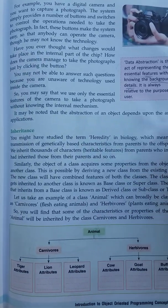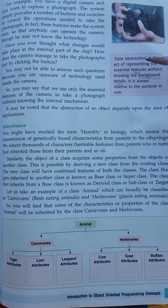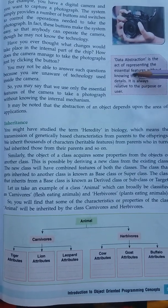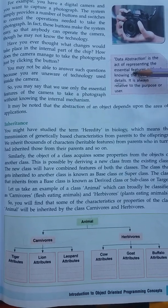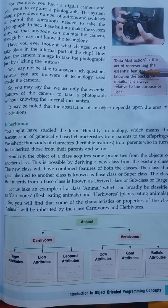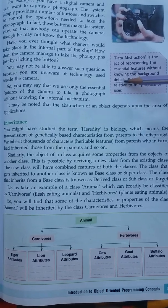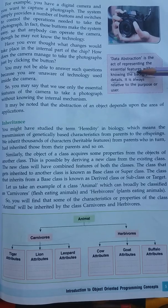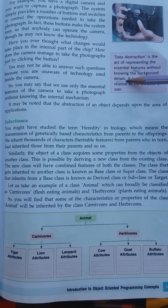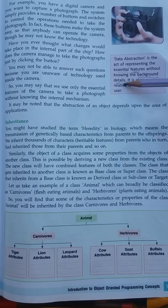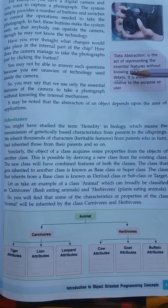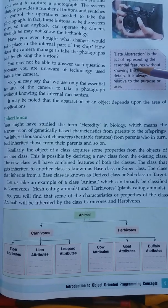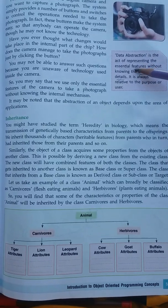Data abstraction is the act of representing essential features without knowing background details. For example, if I'm talking about a mobile, we are interested in features, not background details. Similarly, in any other device we are interested in features, not in background details. If somebody is interested in background details, it means that person is your competitor.